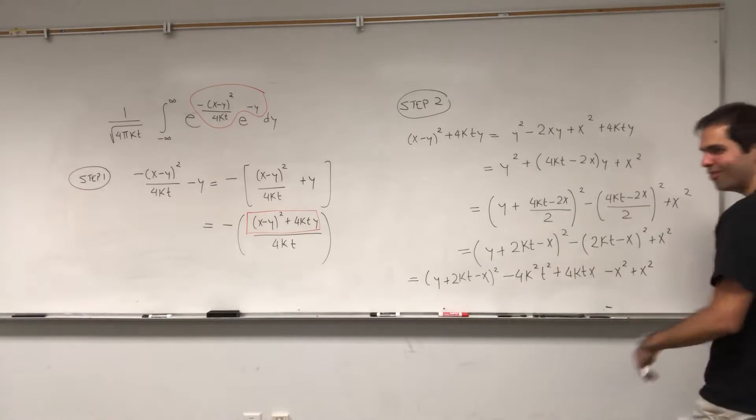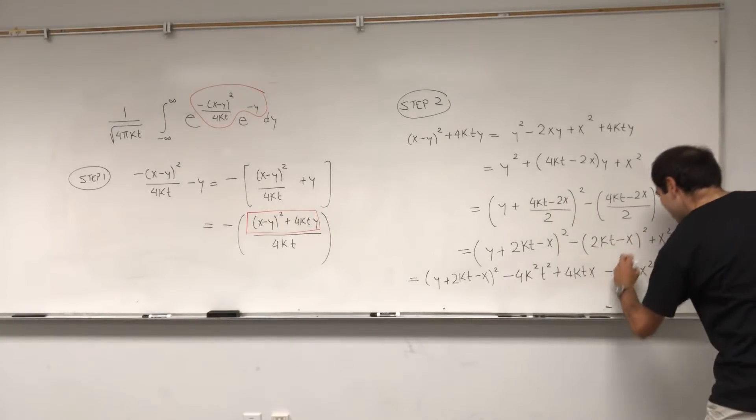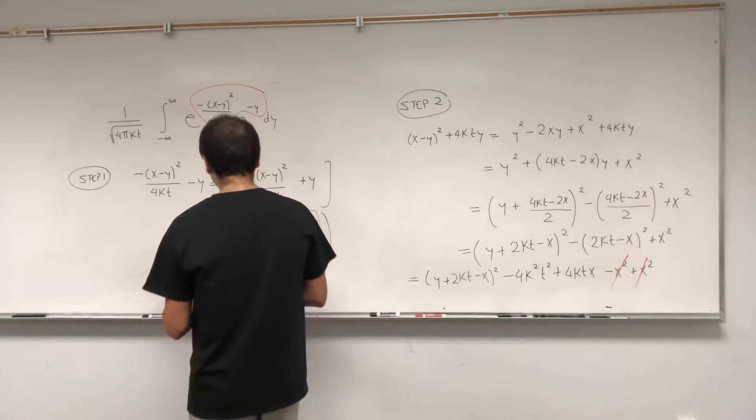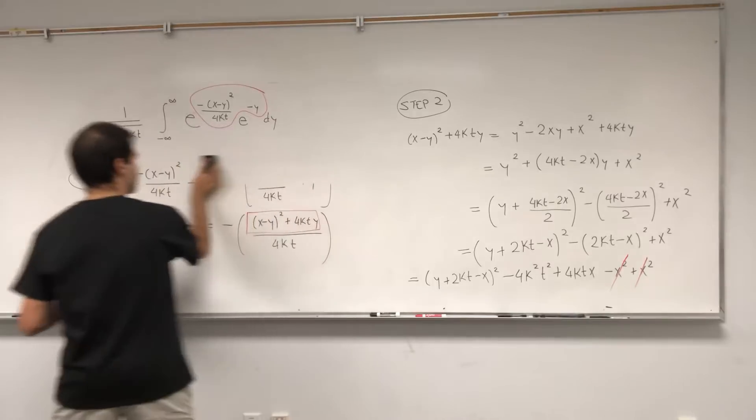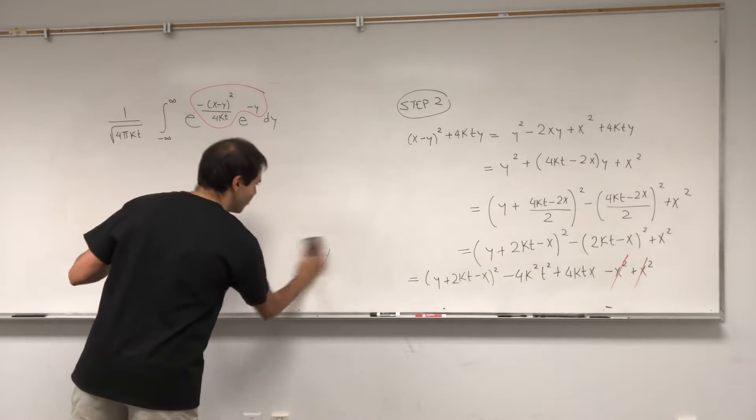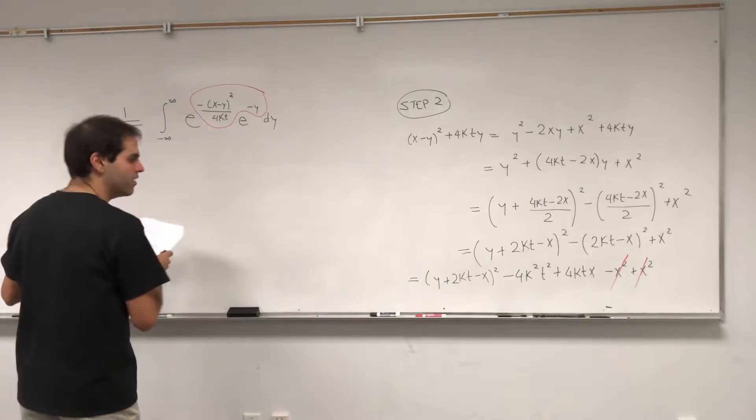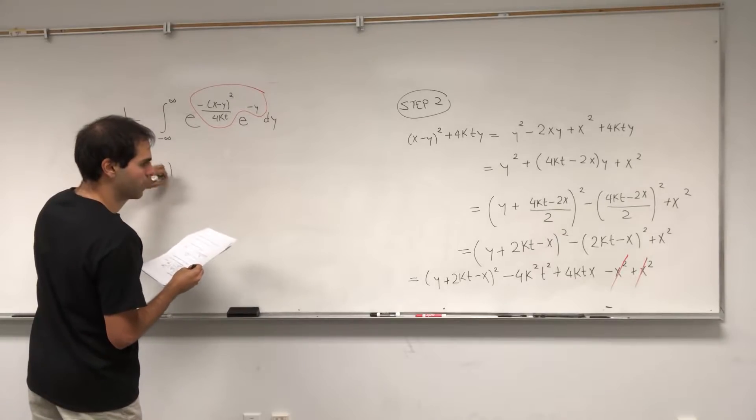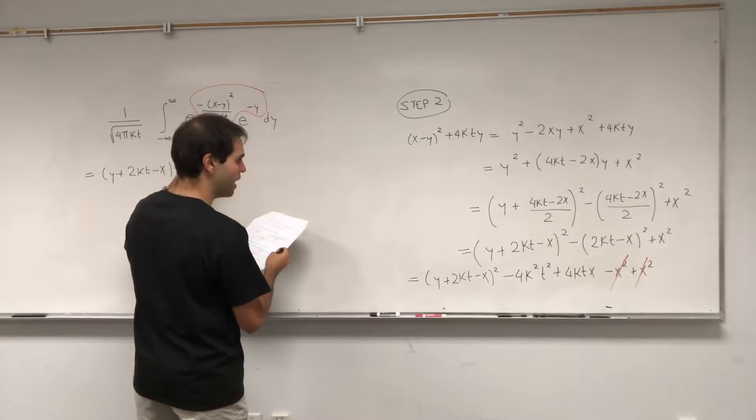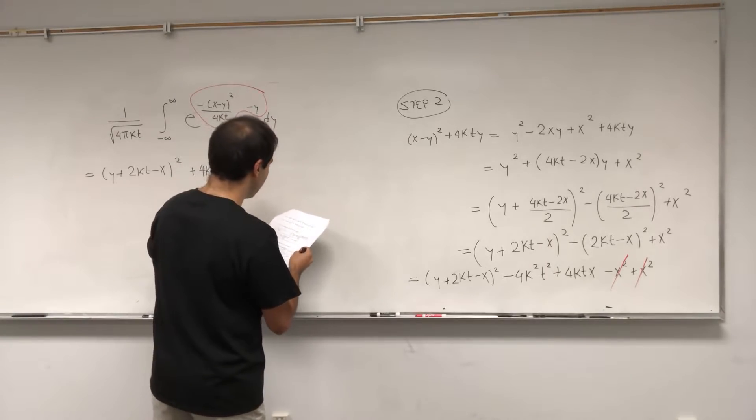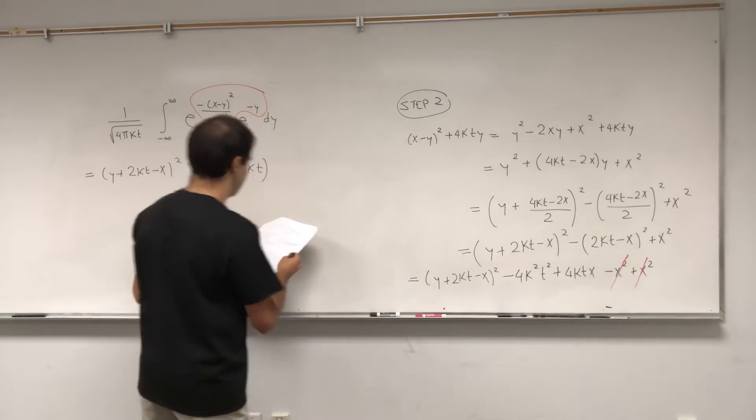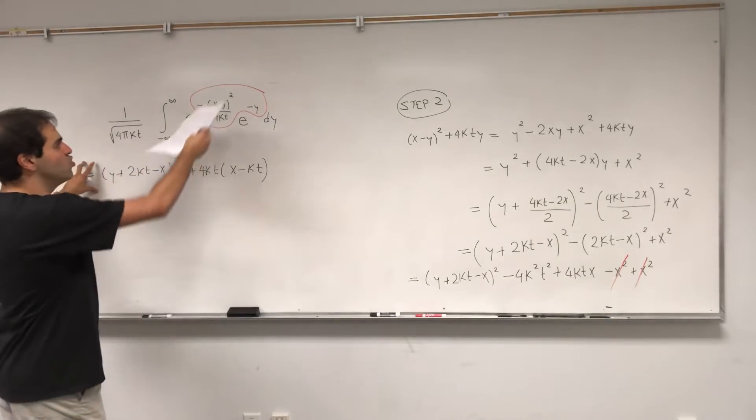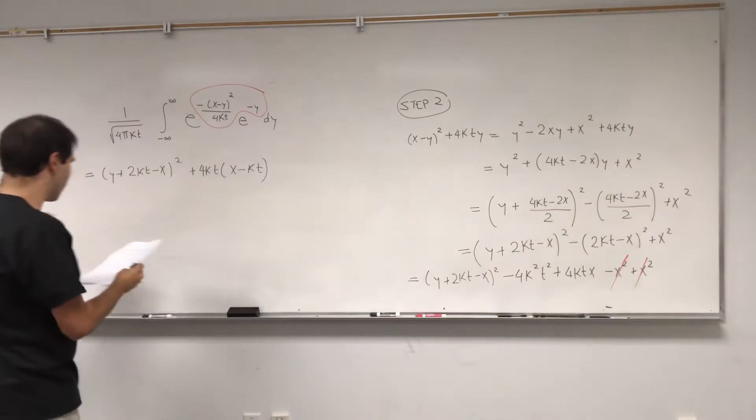Woohoo! That cancels out. And then, not only that, I believe there's a 4kt in this expression as well. So again, let's leave our integral as it is here, and that becomes y plus 2kt minus x squared, and then plus 4kt, and I believe just x minus kt.